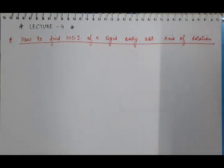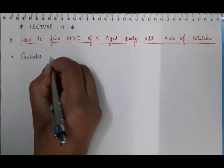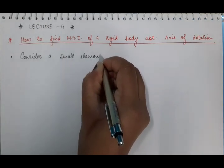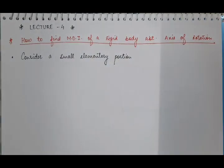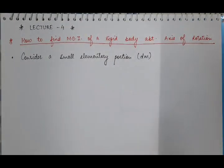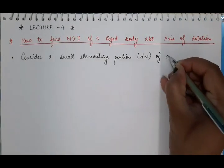First of all, consider a rigid body which is rotating about any axis of rotation. We will take a small elementary portion of that body. The mass of this small elementary portion will also be small — suppose the mass of the elementary portion is dm.